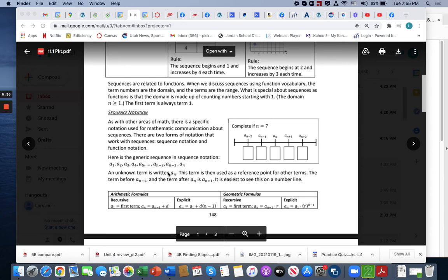An unknown term is written aₙ. This term is often used as a reference point for other terms. The term before aₙ is aₙ₋₁, and the term after aₙ is aₙ₊₁. So again, the term before aₙ, see this would be aₙ₋₁, the term after is aₙ₊₁.